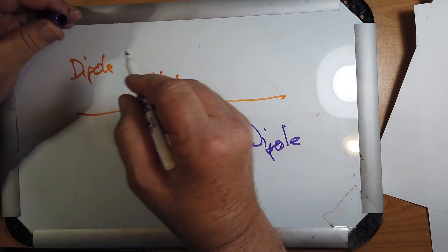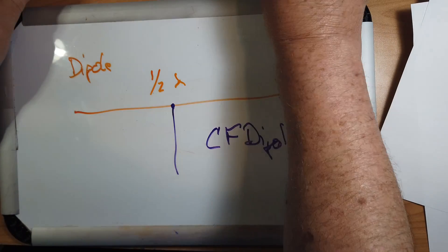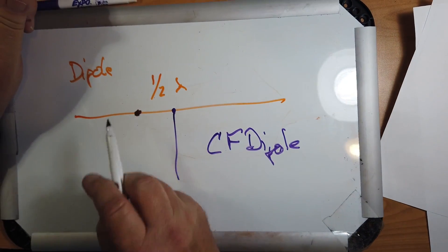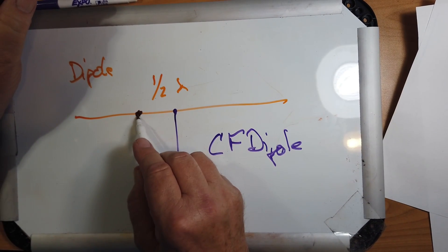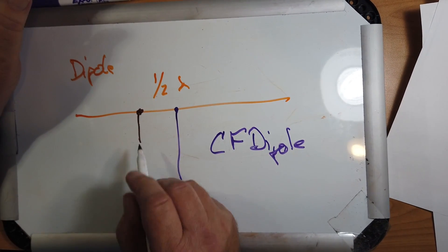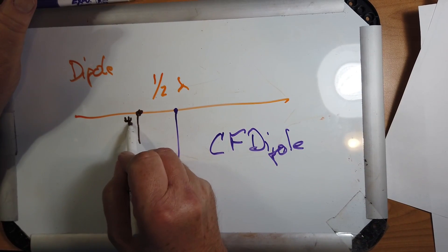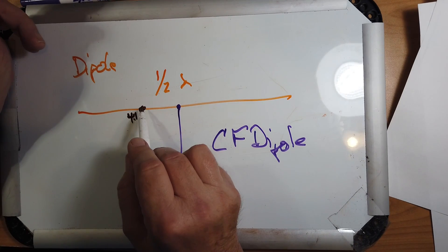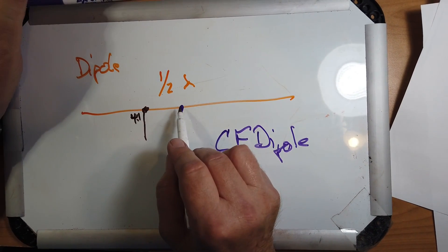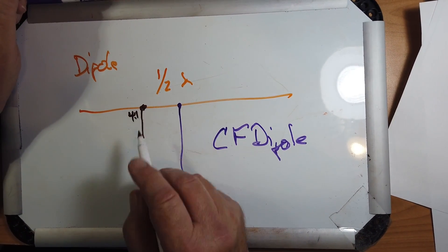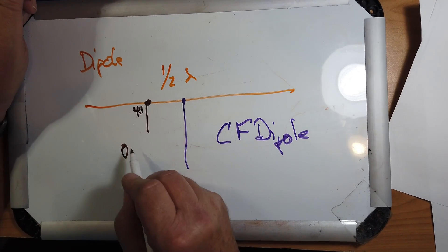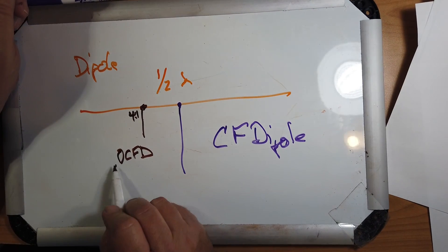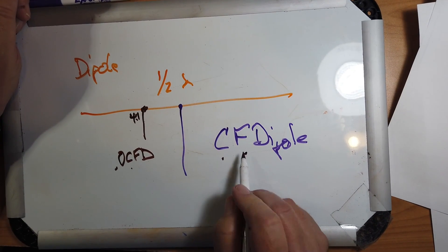Then there are other systems out there. For example, if you feed it at the one-third point with a four-to-one balun here, this is fed at a 200-ohm point. This is approximately 50 ohms, 200 ohms. This is an off-center-fed dipole.